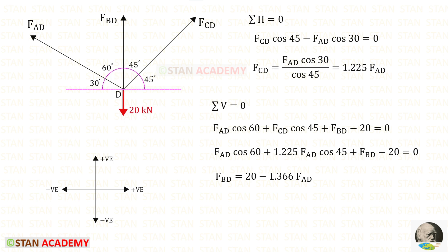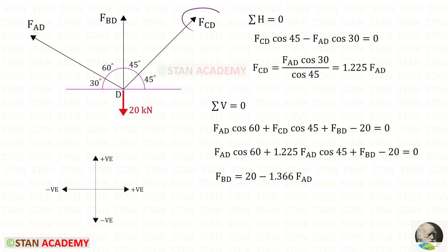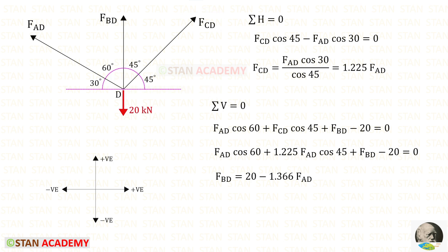First, let us use the rule sigma H = 0. FAD is inclined; we have to resolve it in the horizontal direction. To keep it horizontal, we need 30 degrees, so with FAD we multiply cos 30. Since it is acting towards the left side, it will be negative. FCD is also inclined; to keep it horizontal we need 45 degrees, so with FCD we multiply cos 45. Since it is acting towards the right side, it will be positive. We need to find FCD in terms of FAD.